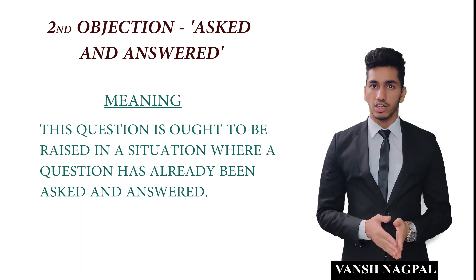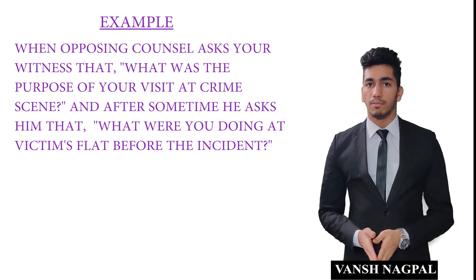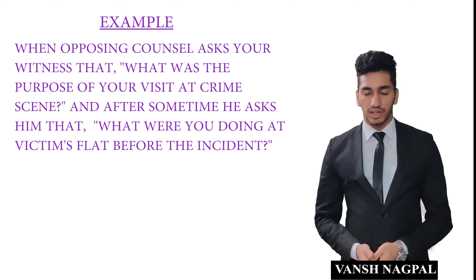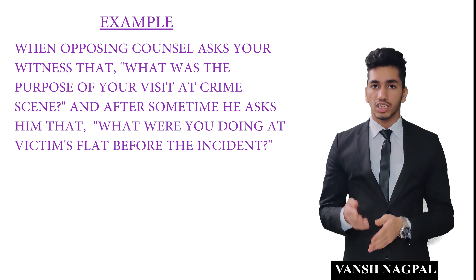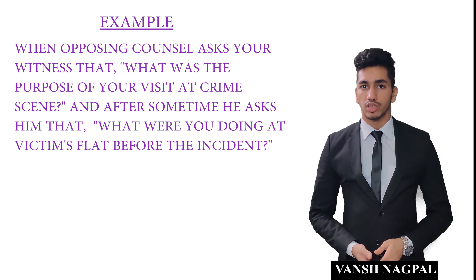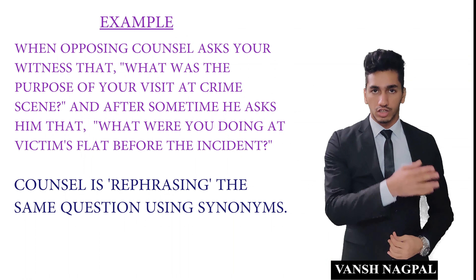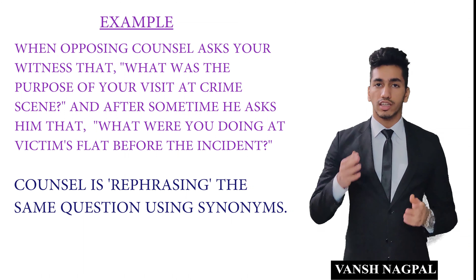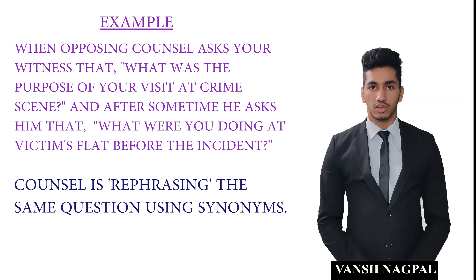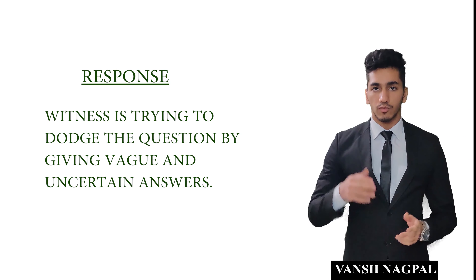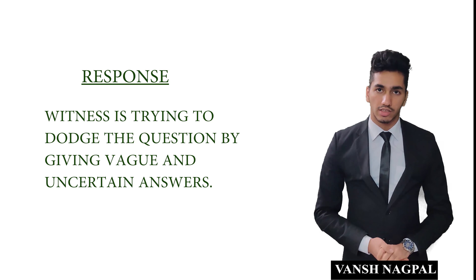The second legal objection is asked and answered. When something has already been asked and answered, and opposing counsel asks it again — perhaps using synonyms or changing the language — you can raise this objection. For example, if counsel asked 'What was the purpose of your visit at the crime scene?' and later asks 'What were you doing at the victim's flat before the crime?' — that is the same question rephrased. If opposing counsel raises asked-and-answered against you, you can respond that the witness is trying to dodge the question by giving vague answers.